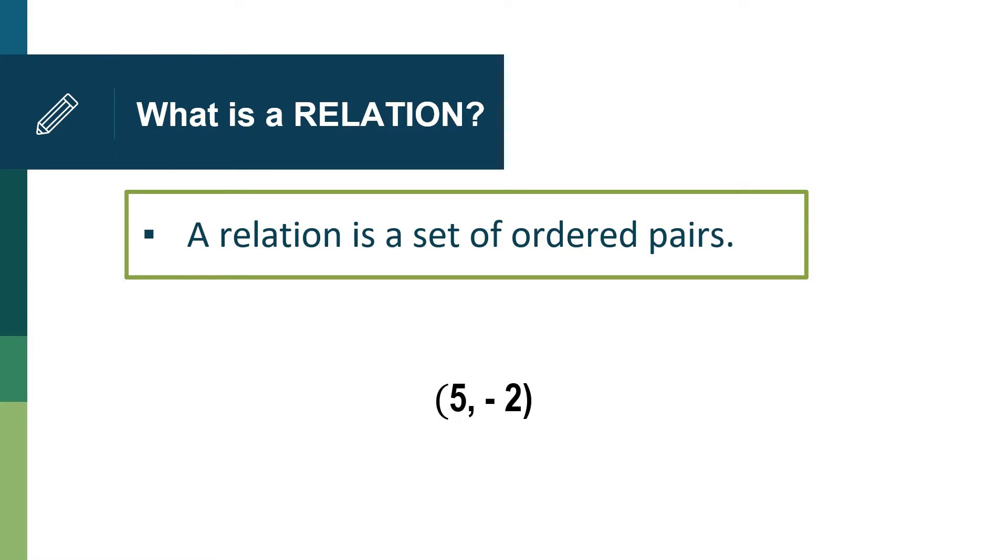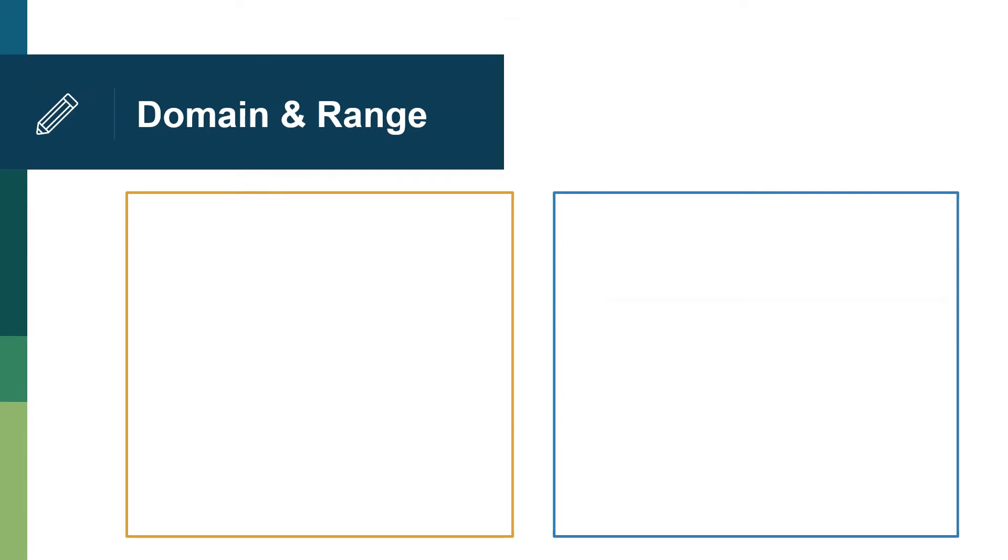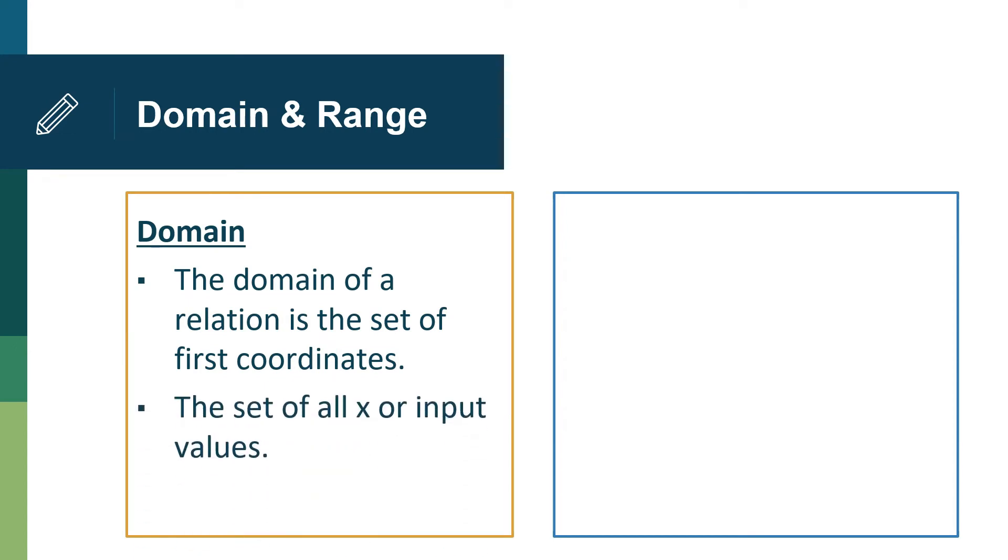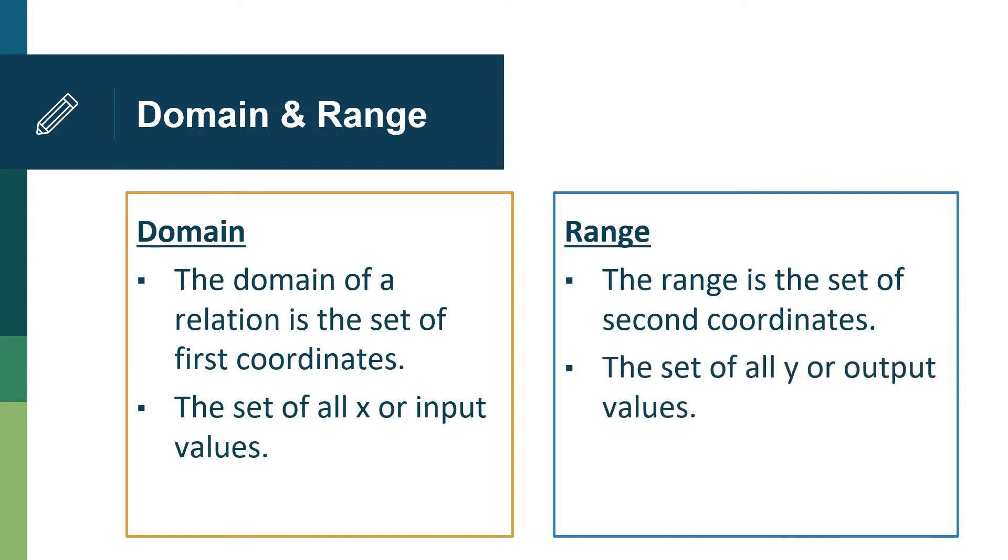5 here refers to your x-coordinate and -2 refers to your y-coordinate. These two can also be called as your domain and your range. The domain of a relation is the set of the first coordinates, or the set of all x, or input, values. While the range is the set of the second coordinates, the set of all y, or output, values.